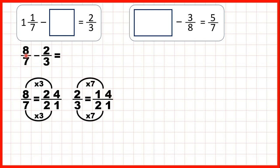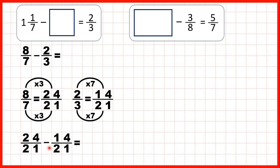So we can rewrite our question. Instead of 8/7, we can write 24/21, and instead of subtracting 2/3, we can subtract 14/21. Now that we have a common denominator, we can subtract our fractions. The denominator stays the same in our answer, and 24 minus 14 is 10, so our missing fraction is 10/21.